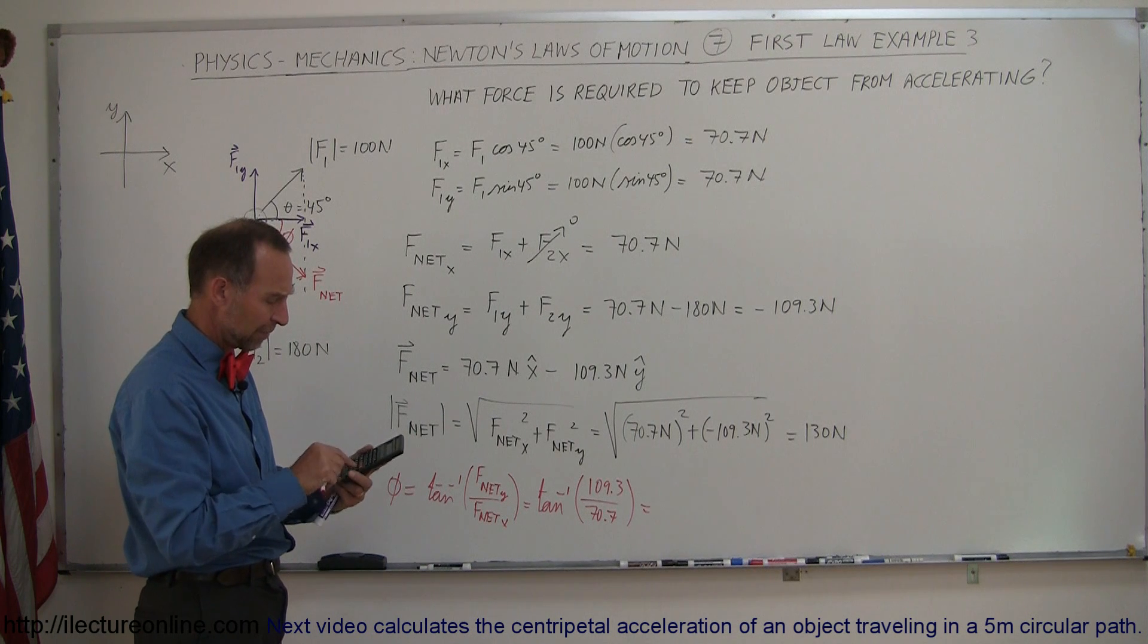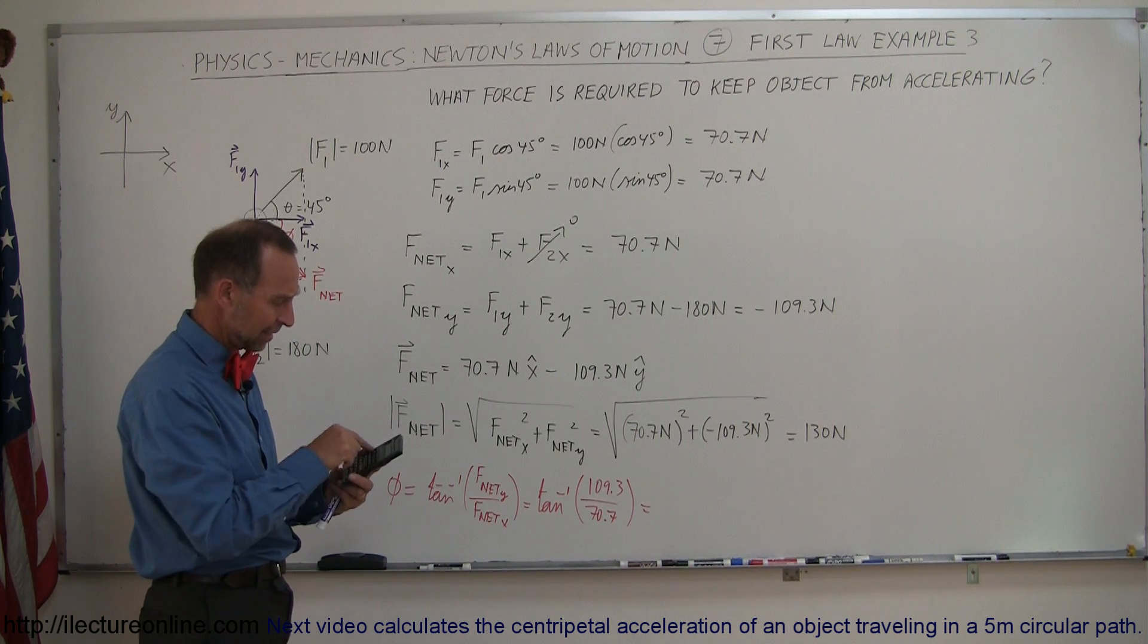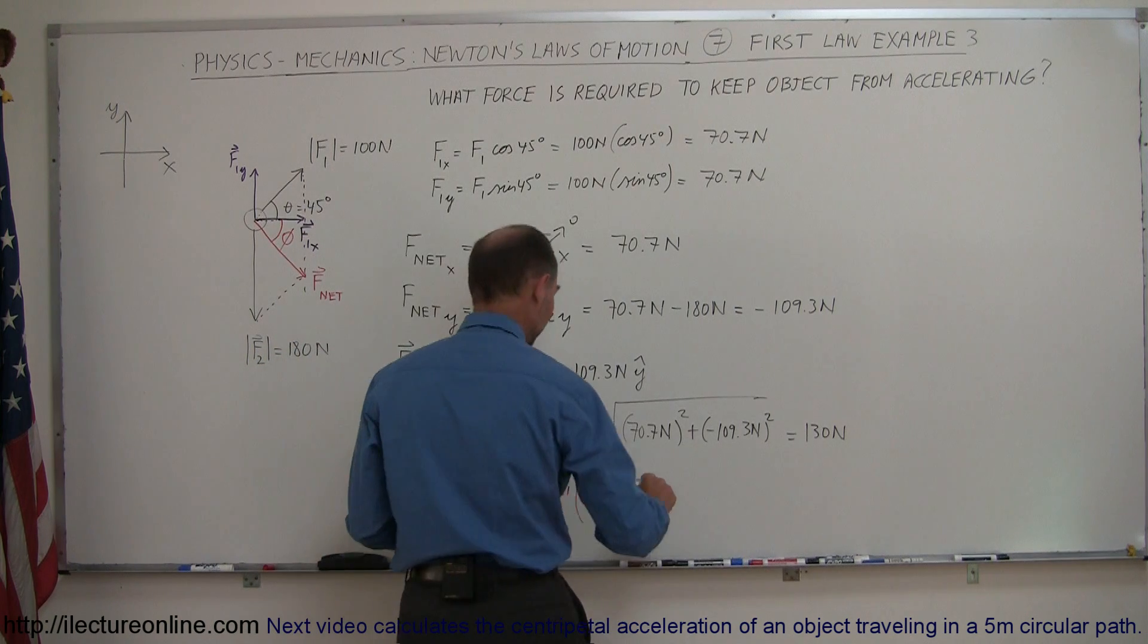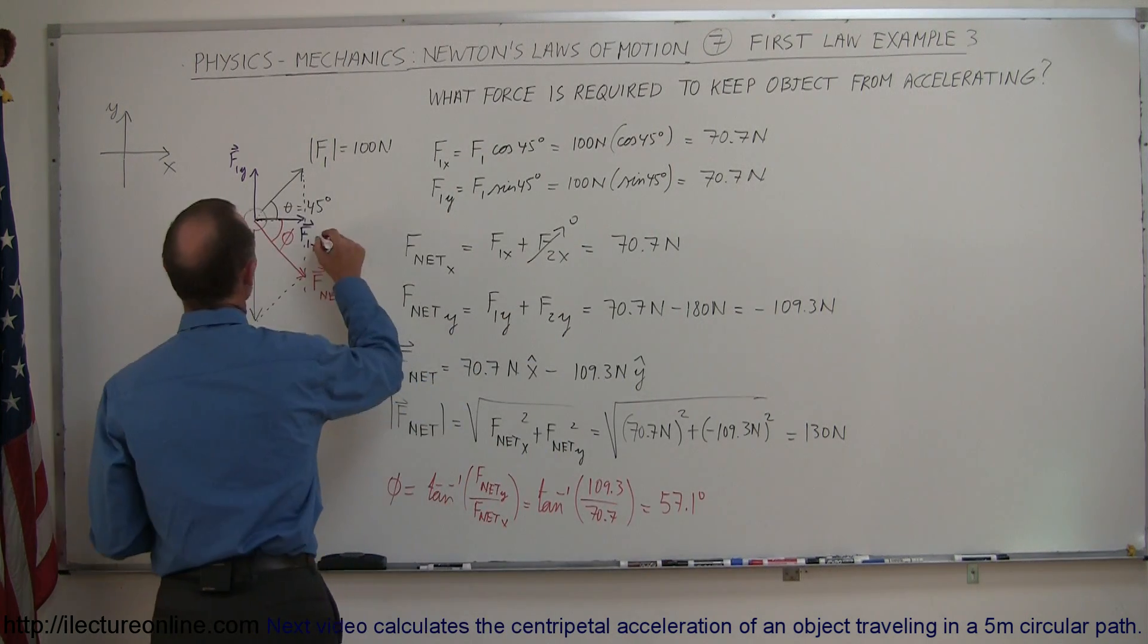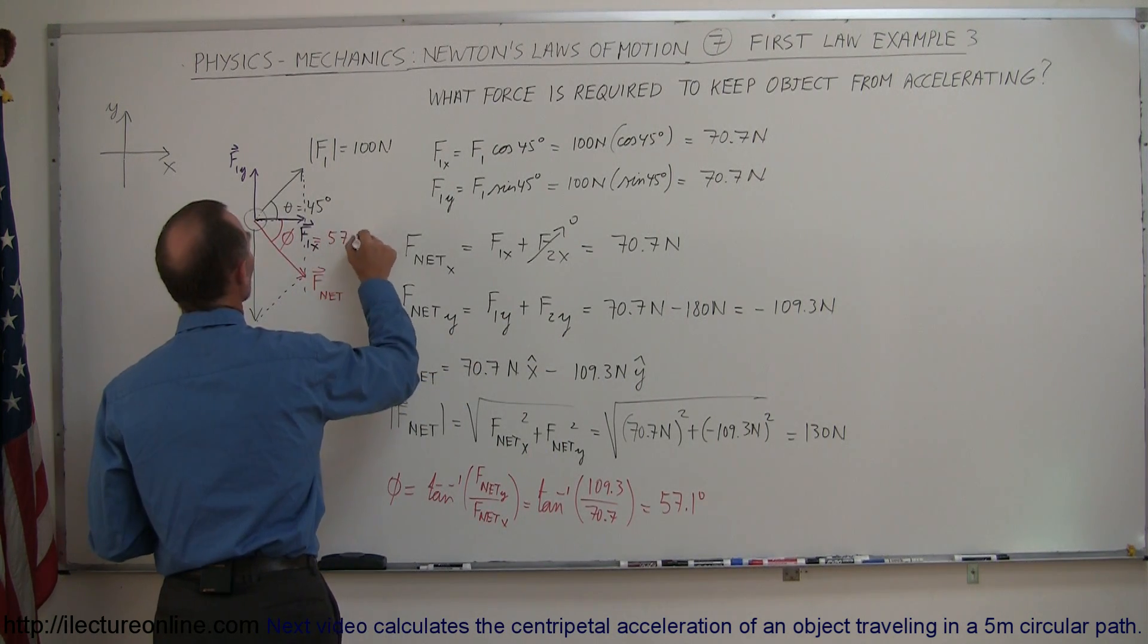So let's do that, 109.3 divided by 70.7, take the arctangent of that, and we get 57.1 degrees. This here would be 57.1 degree.